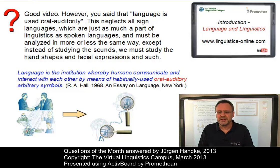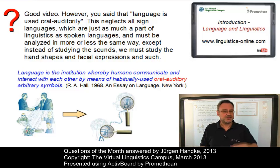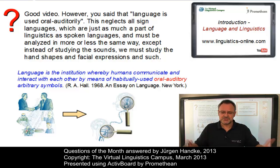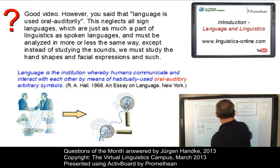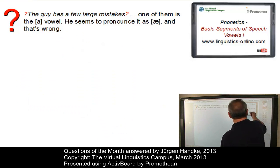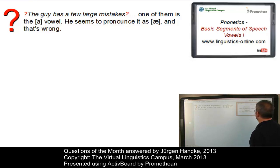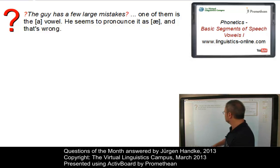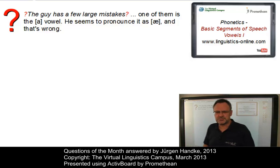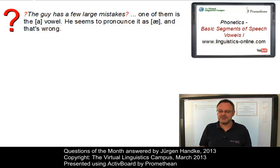Maybe we could say that an oral-auditory language, more commonly known as speech, is the prototypical modern use of language among humans, and that others such as sign language are less prototypical types. The next question is about cardinal vowels — a comment in the video 'Basic Segments of Speech: Vowels 1.' Someone has a different idea about the production of cardinal vowel number 4, so let us look at it more closely.